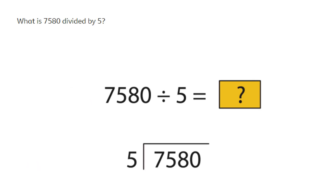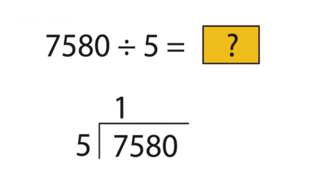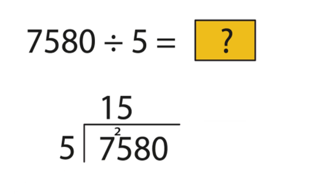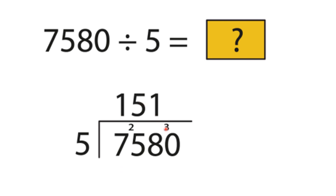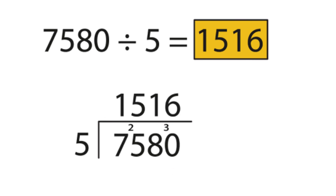Now let's look at a much larger number. I have 7580 and I'm dividing by 5. The number I'm dividing by goes outside the bus stop and the larger number goes inside. How many groups of 5 can I get into 7? I can get one group, with 2 left over — so I carry that over. Now how many groups of 5 can I get into 25? That's exactly five. Moving to the tens column, how many groups of 5 can I get into 8? That's one, with 3 left over. So how many groups of 5 can I get into 30? That would be six.